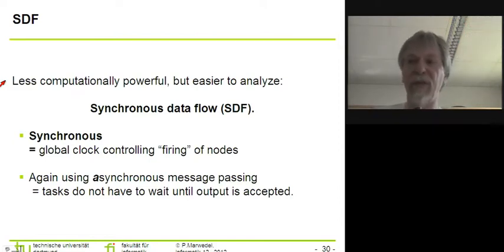We have just seen that for Kahn Process Networks we have a modeling technique which is very convenient and powerful, but very difficult to analyze. In certain cases we do need models that are easier to analyze, where it's reasonably easy to find a safe upper bound on the FIFOs. So therefore we are now looking at the other extreme end of the modeling capabilities, the so-called synchronous data flow.